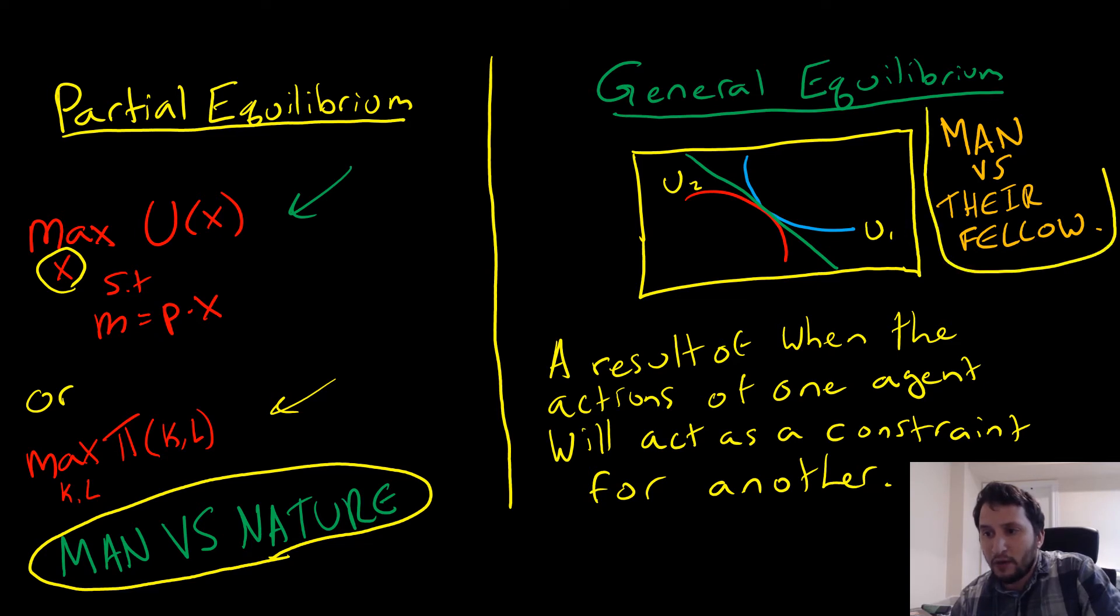Now in general equilibrium, I like to think about these as man versus their fellow type problems, where one agent is going to be constrained by the objective problem of another. So here we have this standard picture of an Edgeworth box. That is the case where we see one agent—the utility of one agent—being constrained not only by the resources in the economy but by how another agent is going to want to get those resources as well.